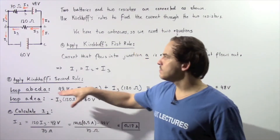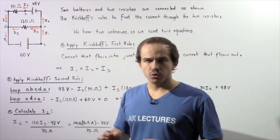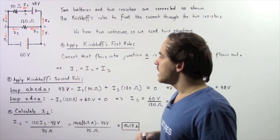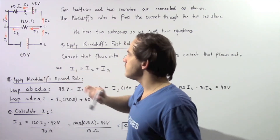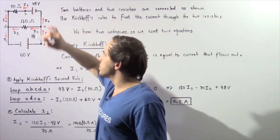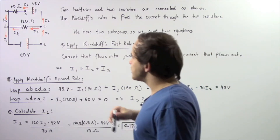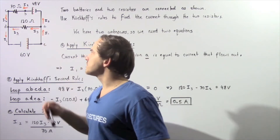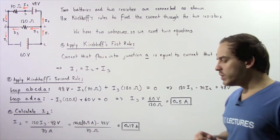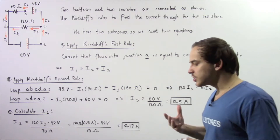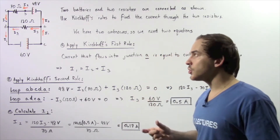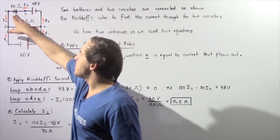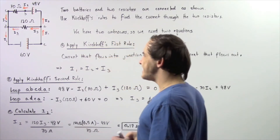Let's examine the following example that deals with two batteries and two resistors placed into an electric circuit. Battery 1 has a voltage of 60 volts and battery 2 has a voltage of 48 volts. Resistor 1 has a resistance of 120 ohms and resistor 2 has a resistance of 70 ohms. We want to apply Kirchhoff's rules to find the electric current that passes through each resistor.